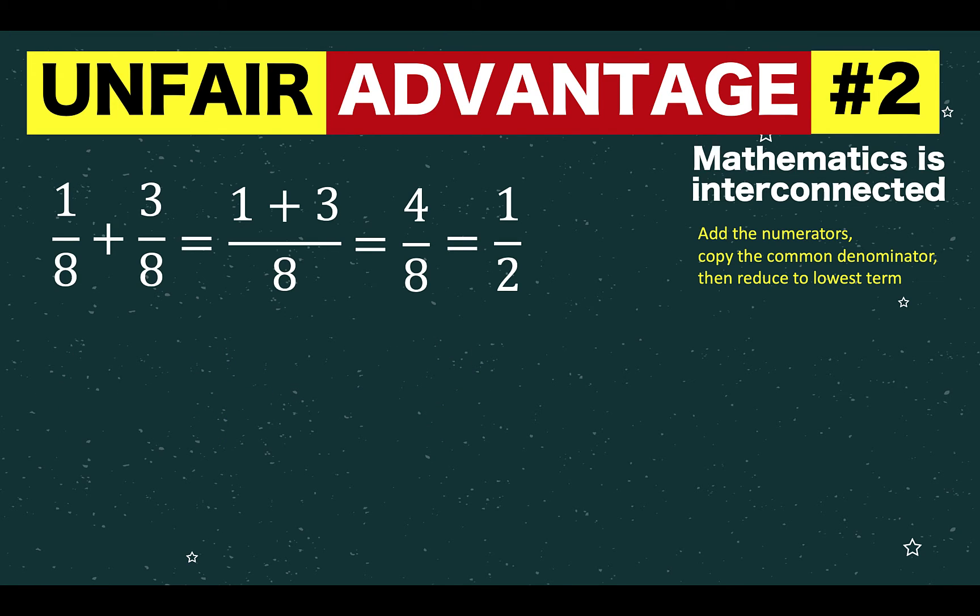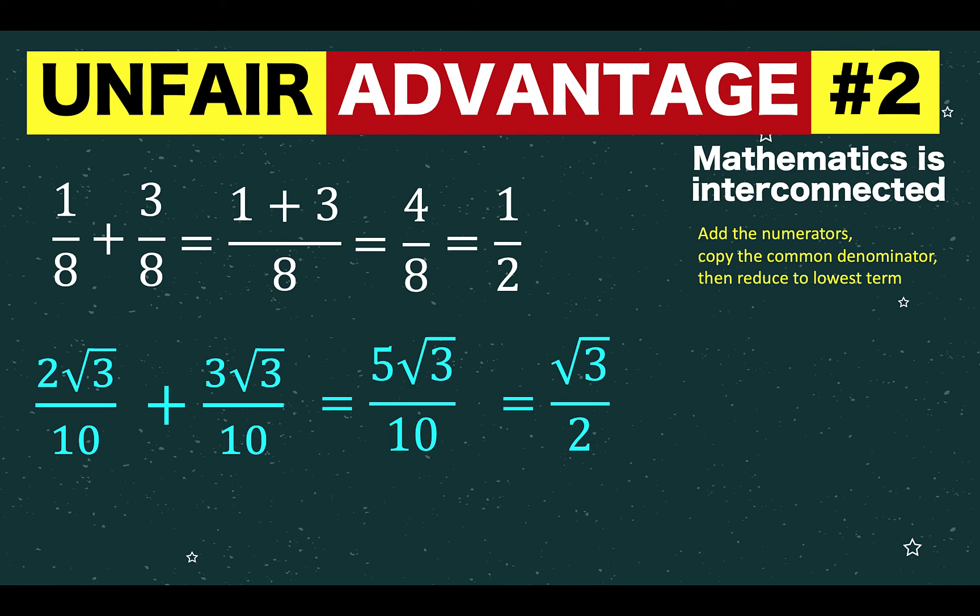The same is true when you add radical numbers. 2 square root of 3 over 10 plus 3 square root of 3 over 10, you do not search for a different rule, you apply the same rule for addition of fractions. You add the numerators, you copy the common denominator, and reduce to lowest term. That is what we mean by mathematics as interconnected.